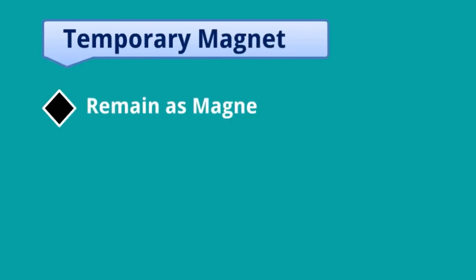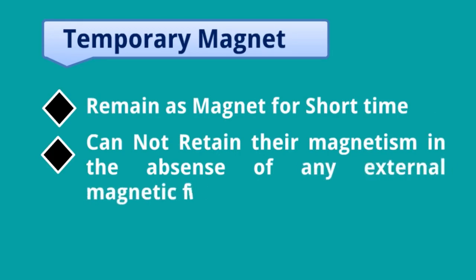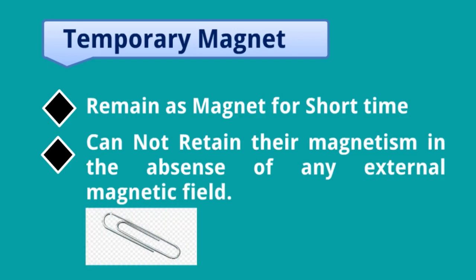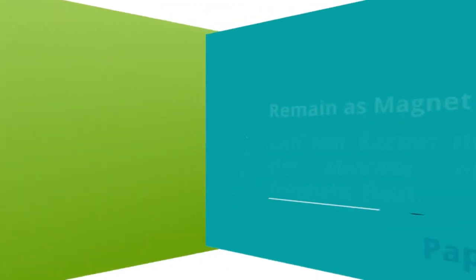Temporary magnets remain as magnets for a very short time and cannot retain their magnetism or characteristics in the absence of an external magnetic field. For example, a paper clip — if we keep a paper clip adjacent to a magnet, the paper clip will become a temporary magnet. However, if we remove the magnet, the paper clip will lose its characteristics.